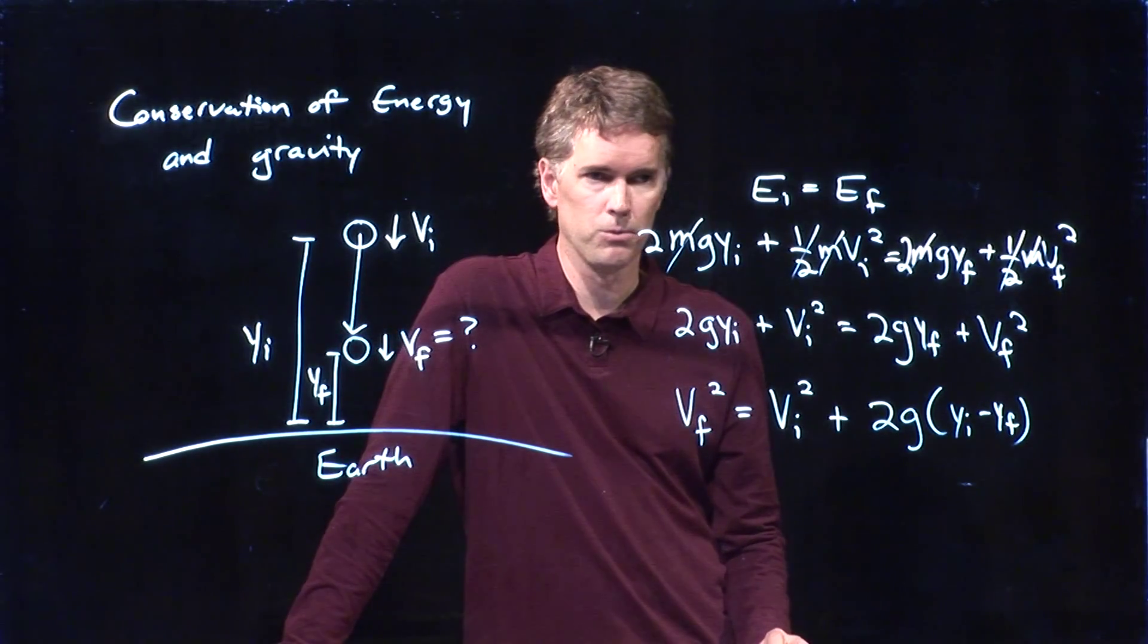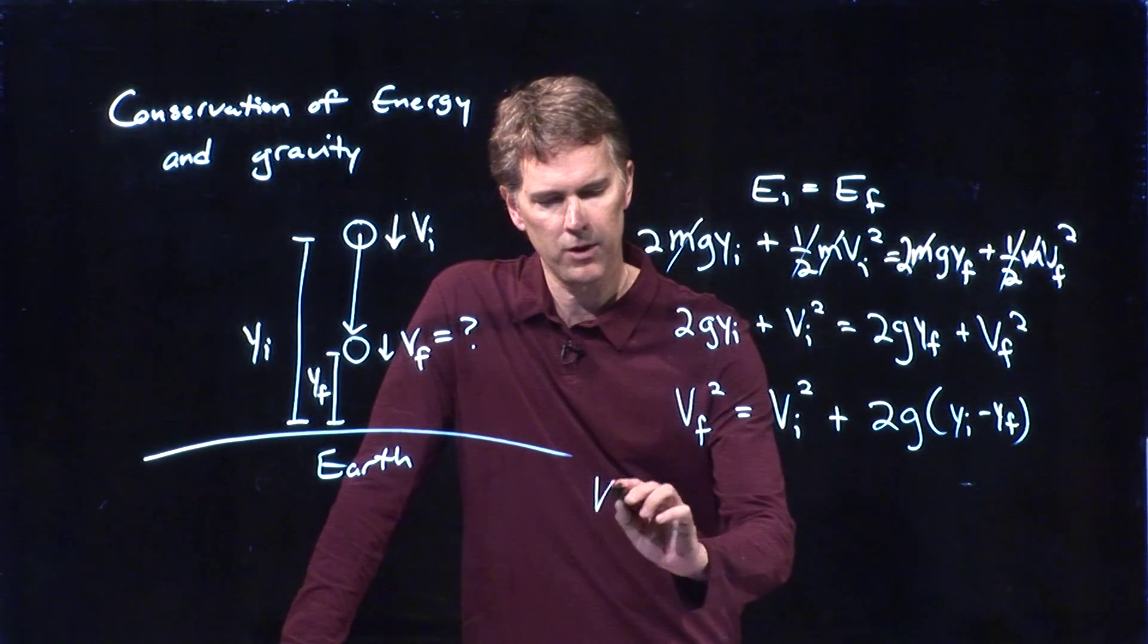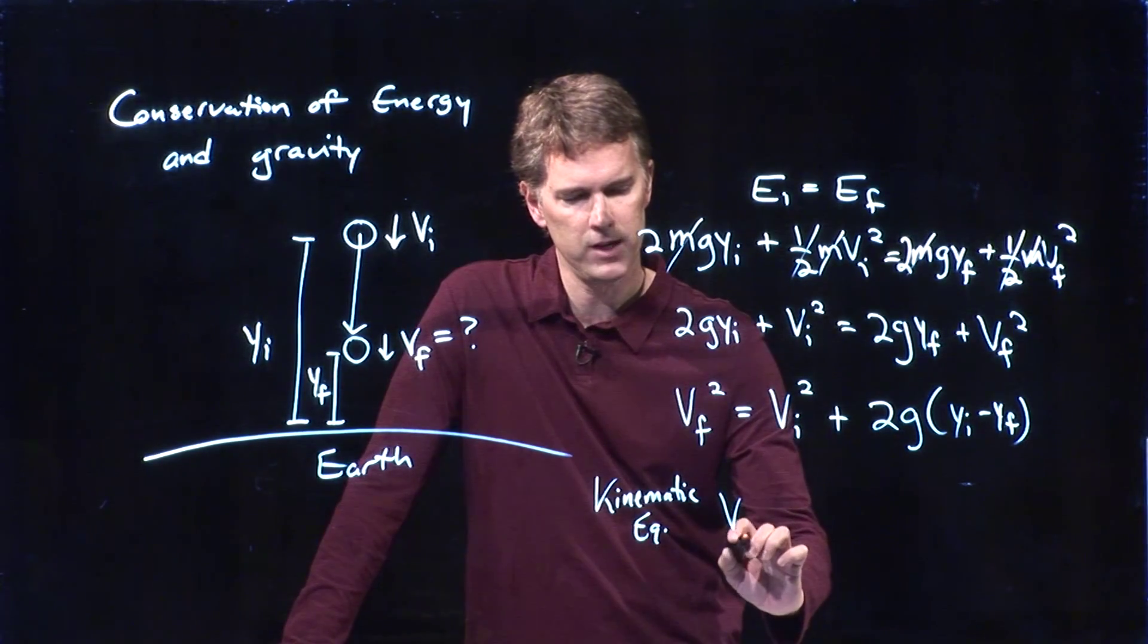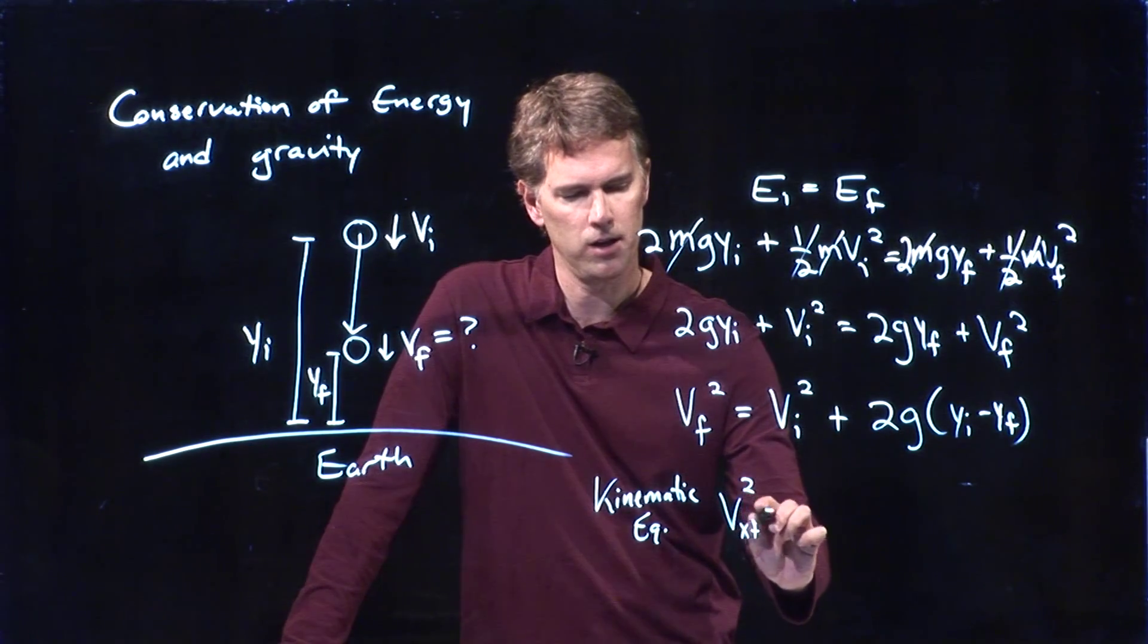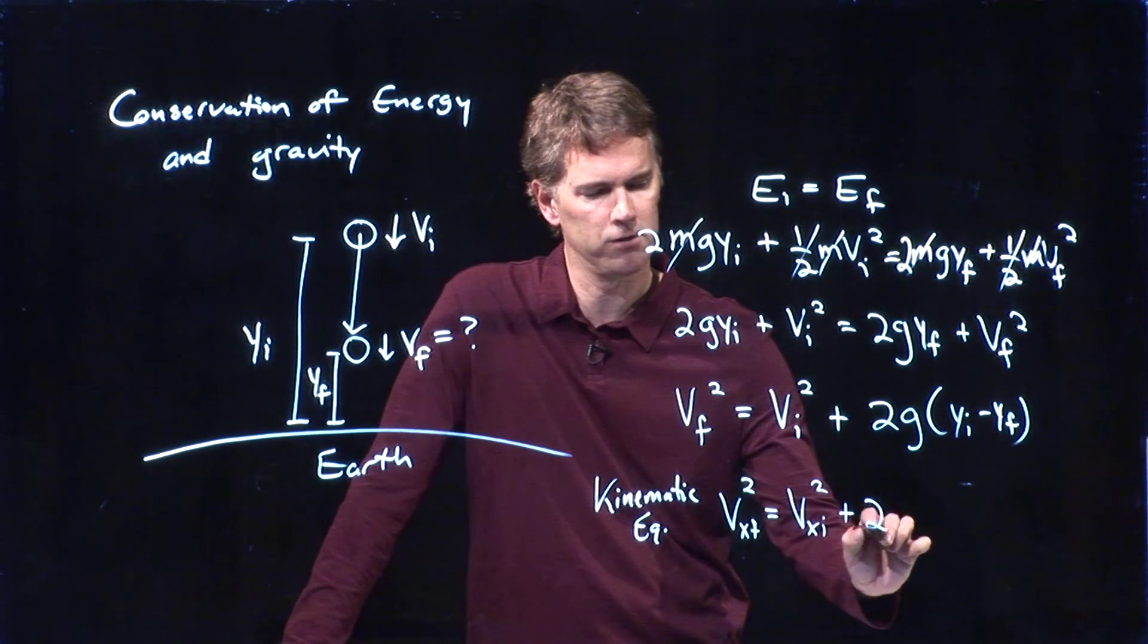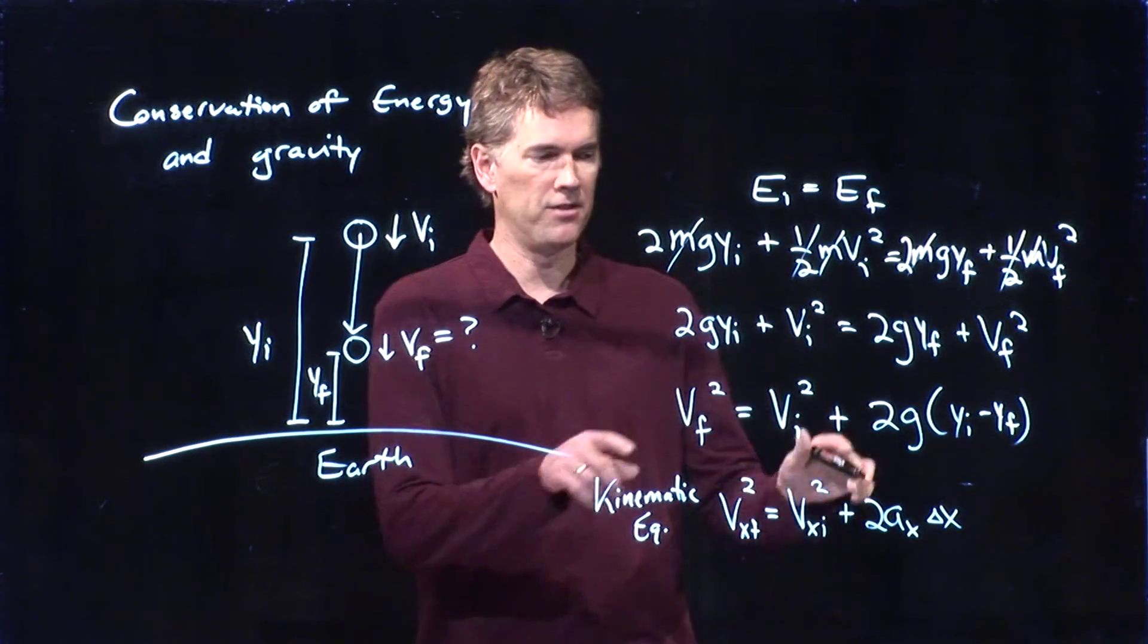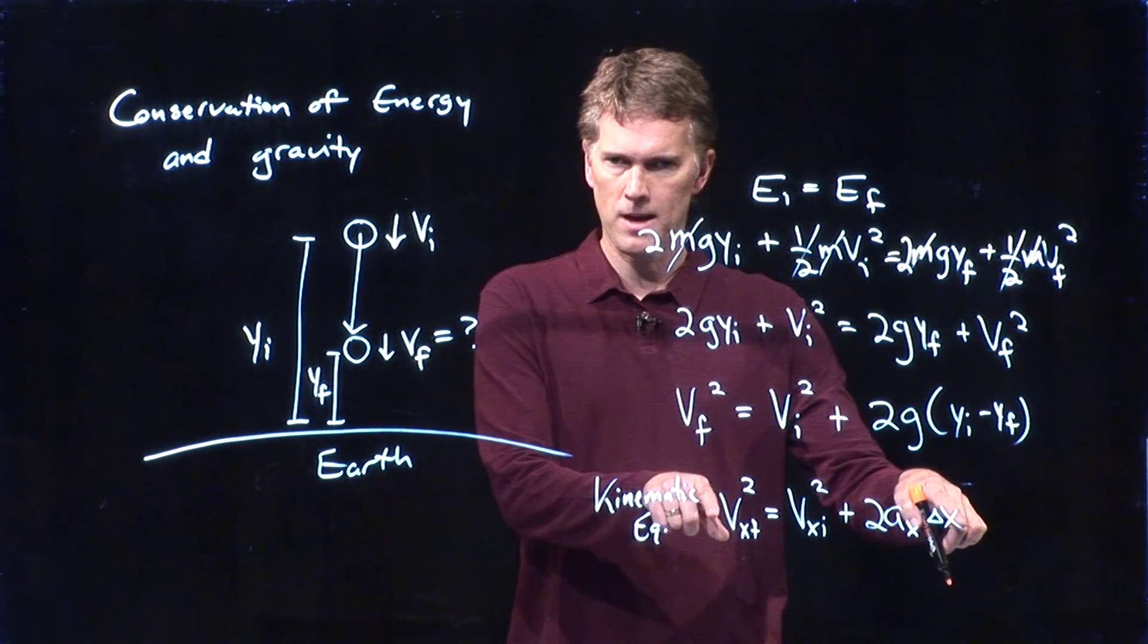And this should look really, really familiar. Remember one of those kinematic equations? It looked like this. Vx final squared equal vx initial squared plus 2a sub x times delta x. It's the exact same equation. It's exactly the same as we had before.